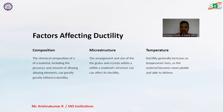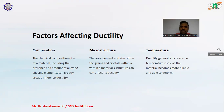Factors affecting ductility. Composition: the chemical composition of a material, including the presence and amount of alloying elements, can greatly influence ductility. Microstructure: the arrangement and size of the grains and crystals within a material's structure can affect its ductility. Temperature: ductility generally increases as temperature rises, as the material becomes more pliable and able to deform.